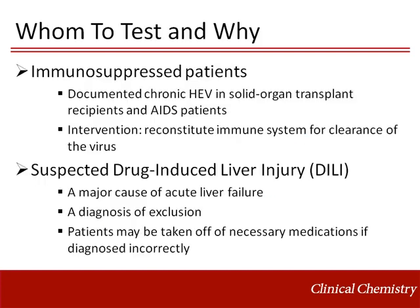Why do we even need to test for hepatitis E, especially in non-endemic areas where infections are predominantly genotypes 3 and 4? One population where the diagnosis is critical is in immunosuppressed patients. Solid organ transplant recipients and patients with AIDS can develop chronic hepatitis E. As with other forms of chronic hepatitis, hepatitis E can progress to cirrhosis in these patients. Additionally, chronic infection has implications for graft survival in liver transplant patients.